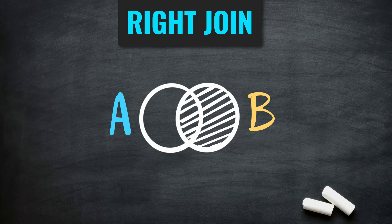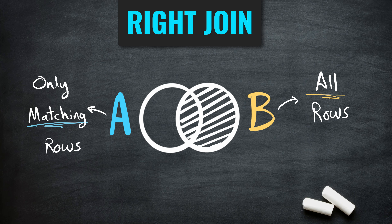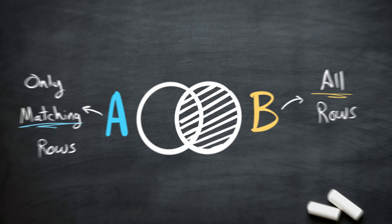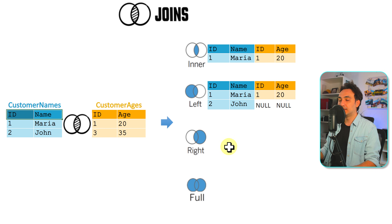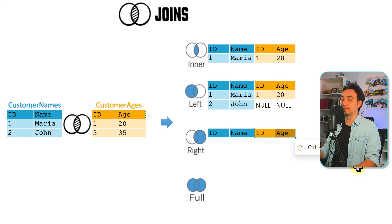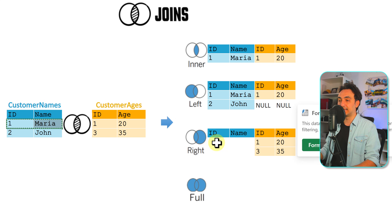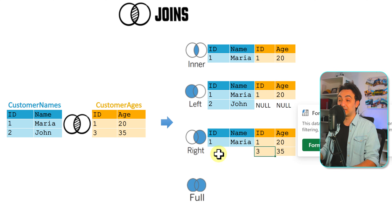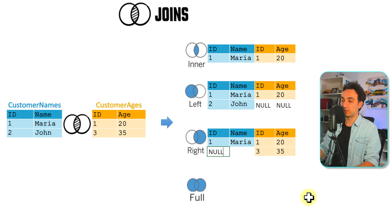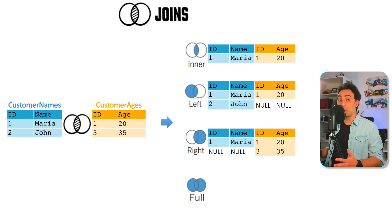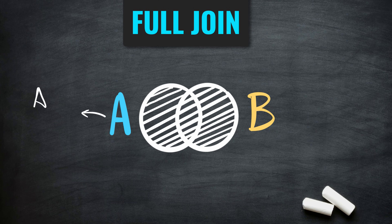Right join works the opposite way — we get all rows from the right table and only the matching rows from the left table. So we start with both customers from the right table. Customer ID 1 matches on the left side, so we add it. Customer ID 3 has no match on the left side, so those fields will be null. It is exactly the opposite of left join.